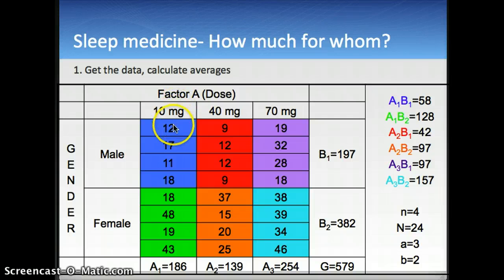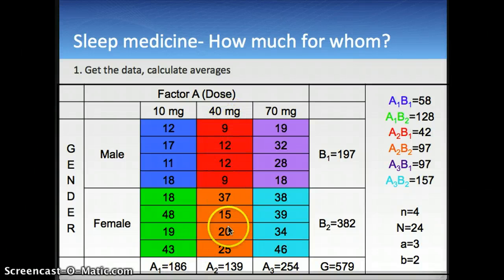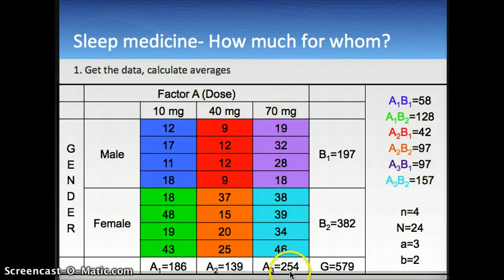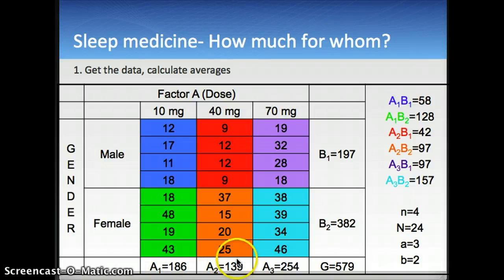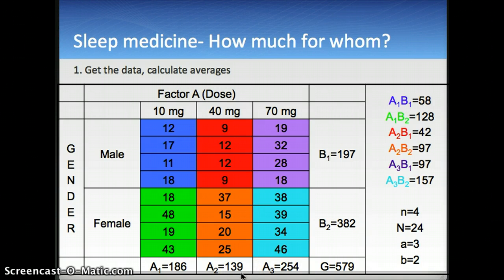At 10 milligrams, the total minutes to fall asleep was 186. At 40 milligrams, the total was 139, and at 70 milligrams the total was 254. So 40 milligrams seems to be the best dosage. This represents the main effect of factor A.